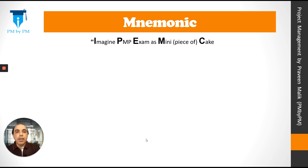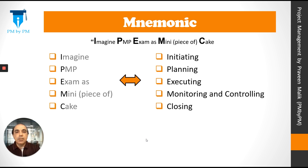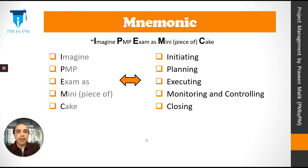Now for the mnemonic I promised at the beginning of this video: imagine PMP exam as mini piece of cake. 'I' means imagine, and 'I' also means initiating. 'P' means PMP, and 'P' also means planning. If you remember this small phrase — imagine PMP exam as mini piece of cake — you will be able to remember the five process groups.